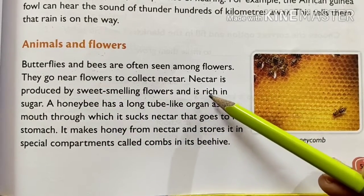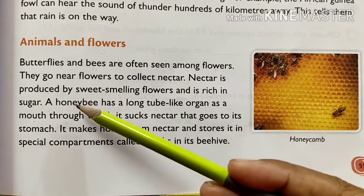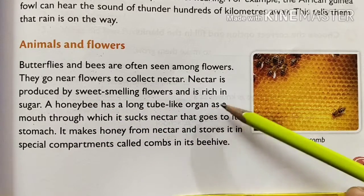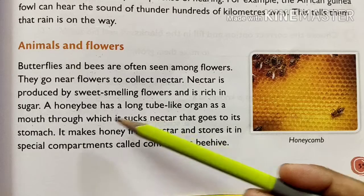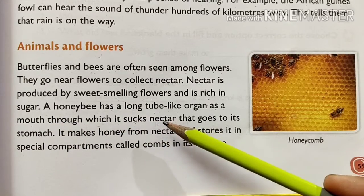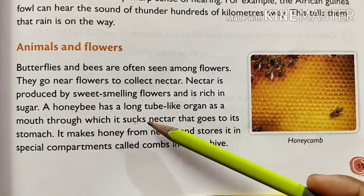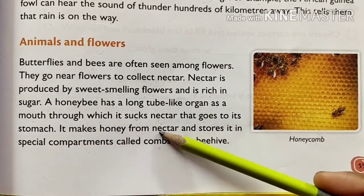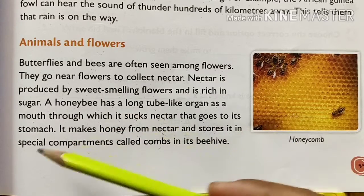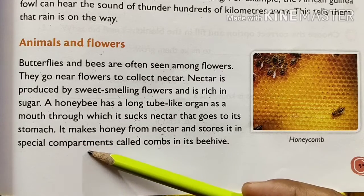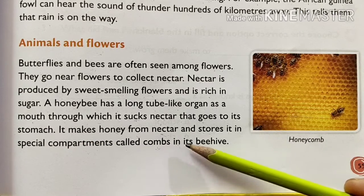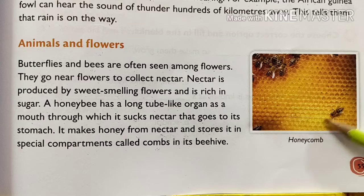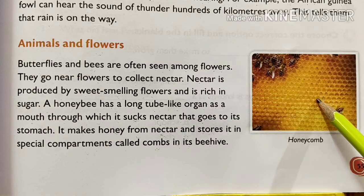A honeybee has a long tube-like organ as a mouth through which it sucks nectar into its stomach. It makes honey from nectar and stores it in special compartments called combs inside its beehive.